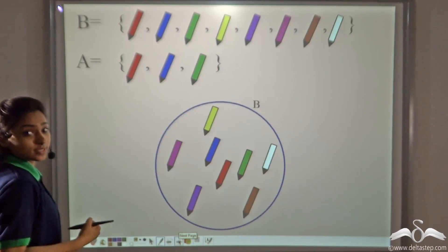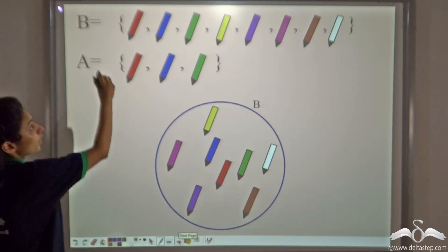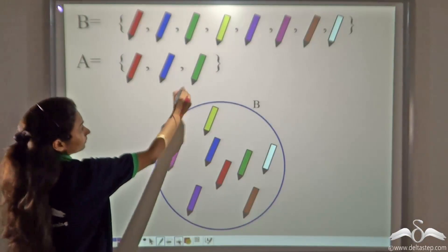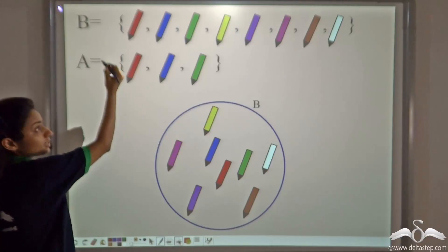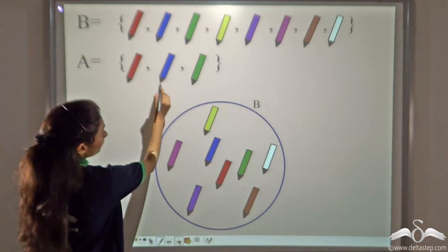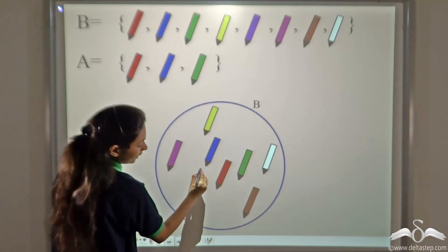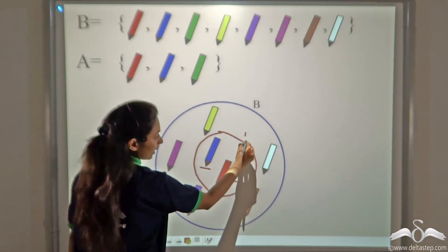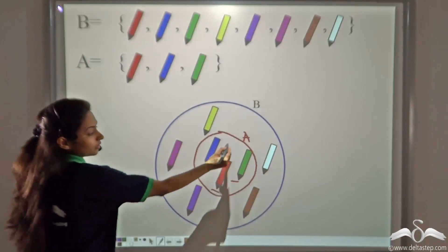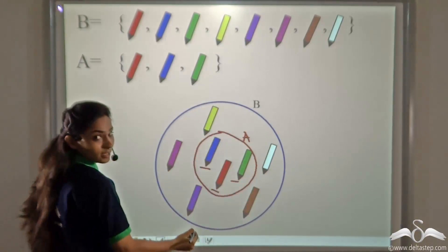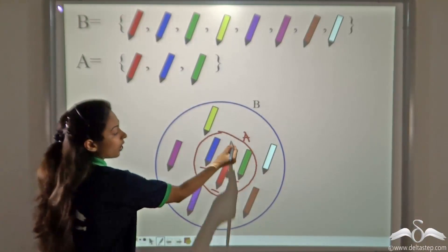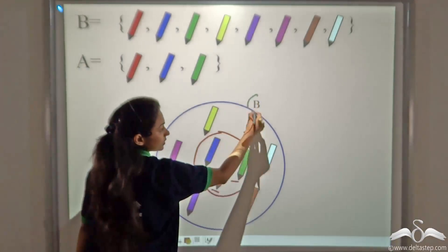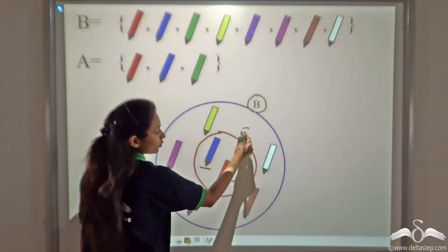Now if you want to denote this in a Venn diagram, B is the set of these pens, so the Venn diagram of B is drawn here. Every element of A — the red, blue and green pen — is already present in B. So we make a smaller circle inside B and name it A. Here A is another set and B is a different set, but A is contained in B. B denotes the superset or main set, and A denotes the subset.